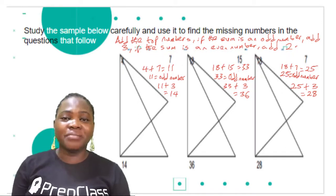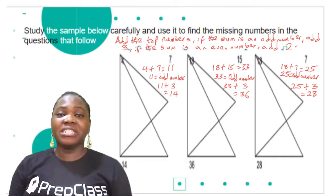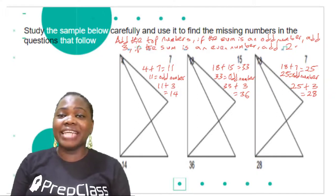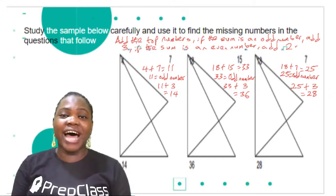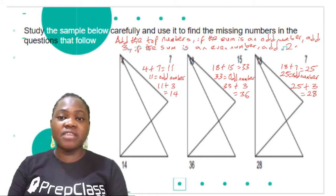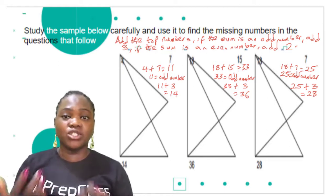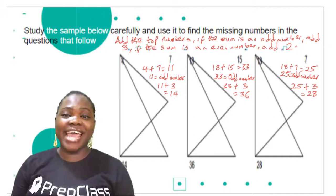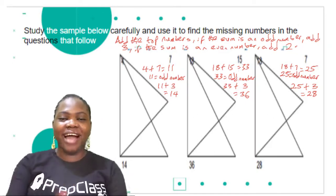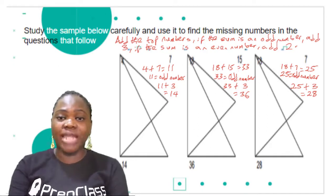Odd numbers are numbers that end in 1, 3, 5, 7, and 9. So if your sum ends in any of those, all you have to do is add three. But if the sum is an even number — that is, if the number ends in 2, 4, 6, 8, and 0 — all you have to do is add two. Now let's check the samples and see if it goes with that logic.